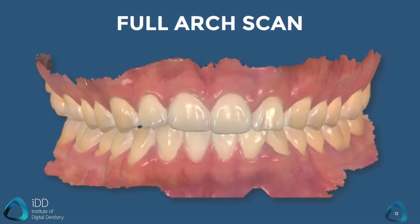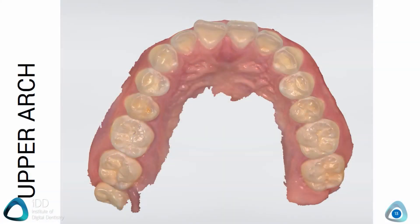Taking a good full arch scan is a fundamental skill, as it's important for many different applications such as aligners, orthodontics, restorative, and many dental appliances. The first image you take is crucial, as the scanner will build the entire scan on that first image. You want a smooth and logical scanning flow without requiring too many stops. This is why we start at the occlusal aspect of the last molar.